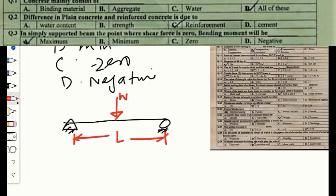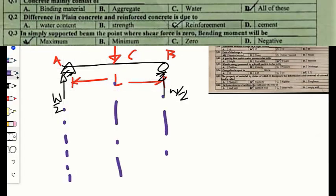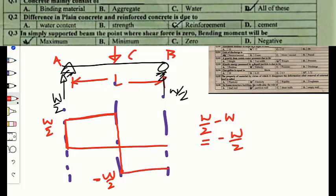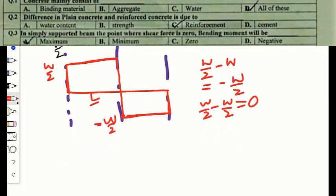L is the span of the beam. The support reaction at point A will be W/2 and at point B will be W/2. At point A, the shear force will be W/2. From A to C there is no load, so shear force is constant. At point C, there is a downward force W, so W/2 minus W equals minus W/2. From C to B the shear force is constant at minus W/2, and at point B the reaction brings shear force to zero.